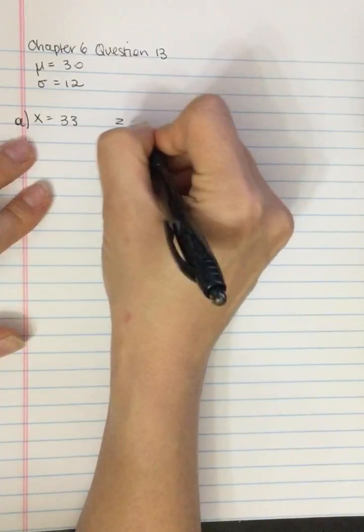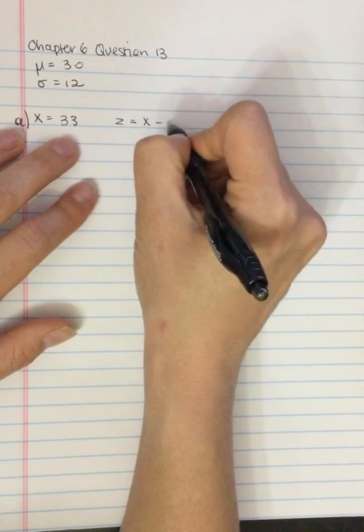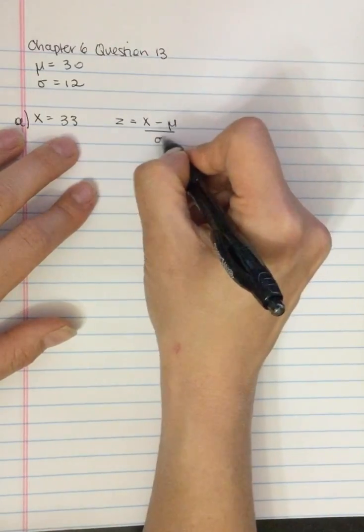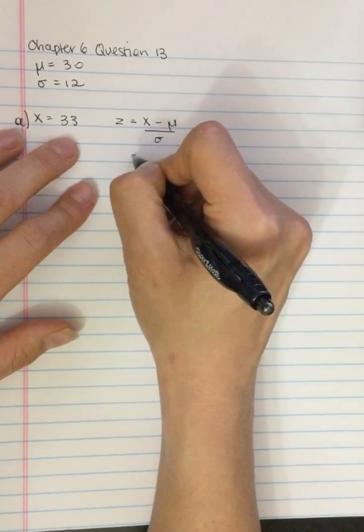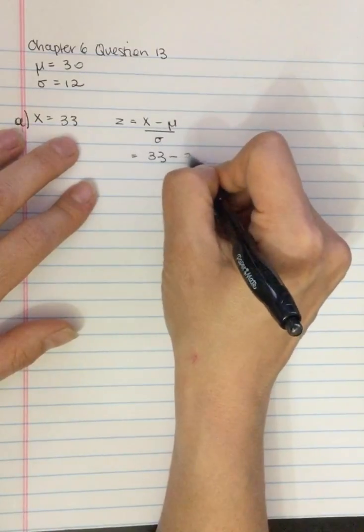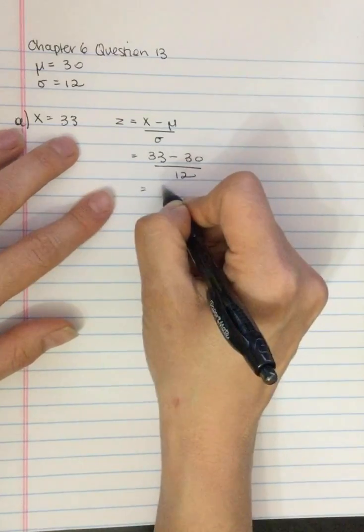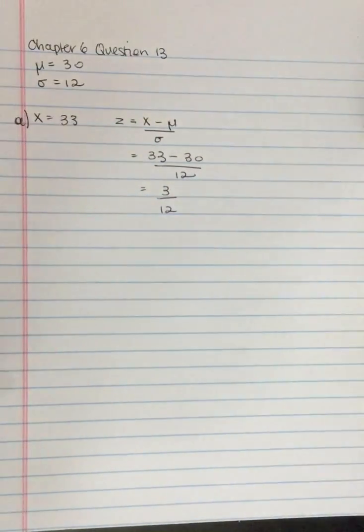So z equals the score minus the mean divided by the standard deviation. So 33 minus 30 divided by 12. So we've got 3 divided by 12, which is 0.25.